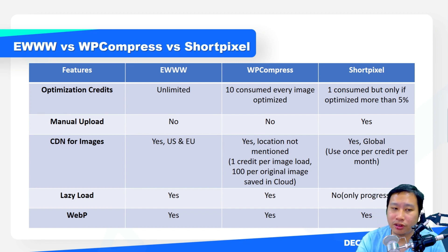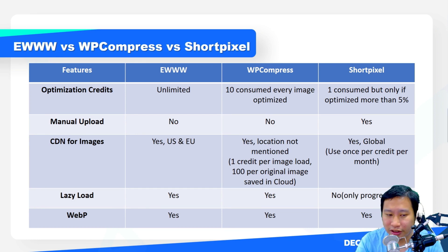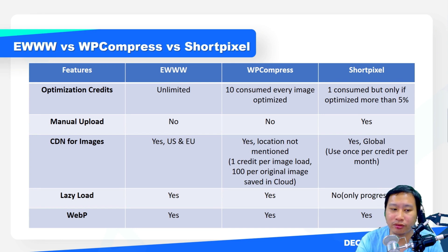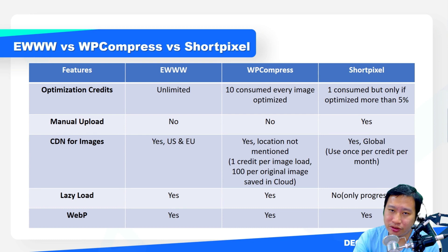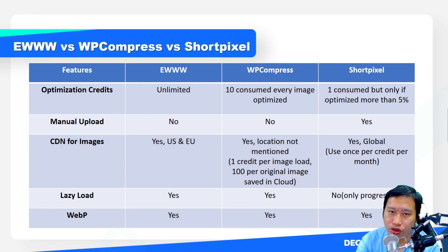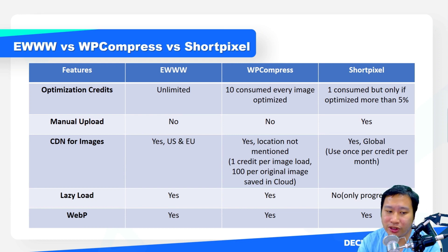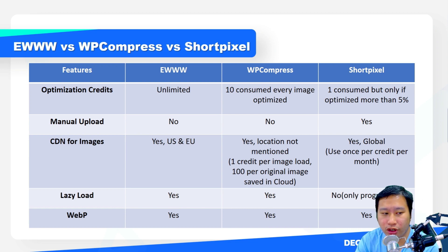For WP Compress, they do have a CDN but the server locations are not mentioned. It is one credit per image load, meaning every time someone visits your website and an image loads, it takes up one credit. Even though WP Compress gives very generous credits, those credits are consumed very quickly. And every time you optimize an image and save it to the cloud, it uses 100 credits.